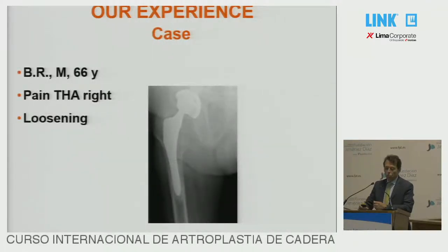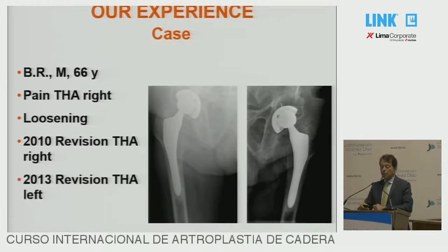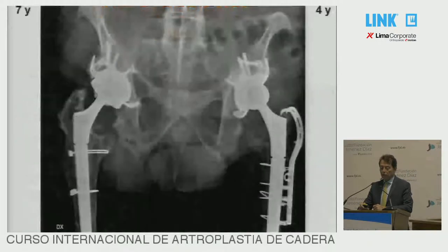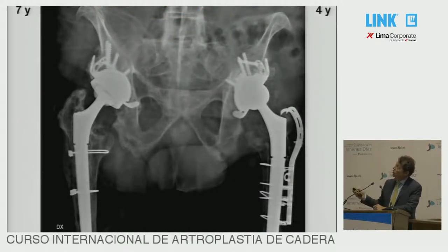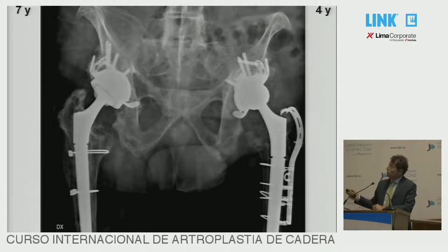Here is one case showing the use of this cup. There was a loosening of an old ABG stem and ABG cup. We performed a revision in 2010, and in 2013 the other hip was revised as well. This is seven years and four years of follow-up. You can see the use of a Delta revision cup with the hook, flange, and screws. On this side, to fix a greater trochanter, a dual-plate was used.